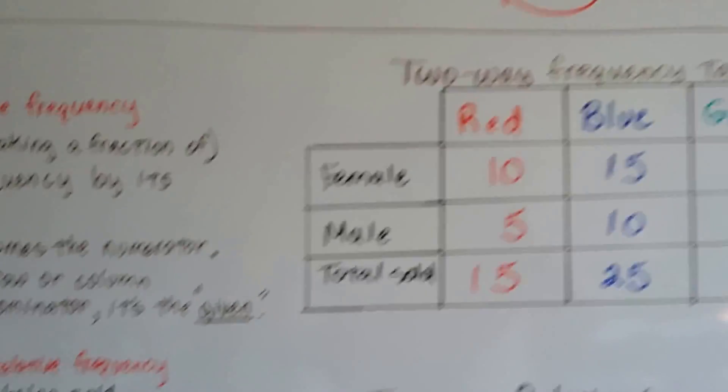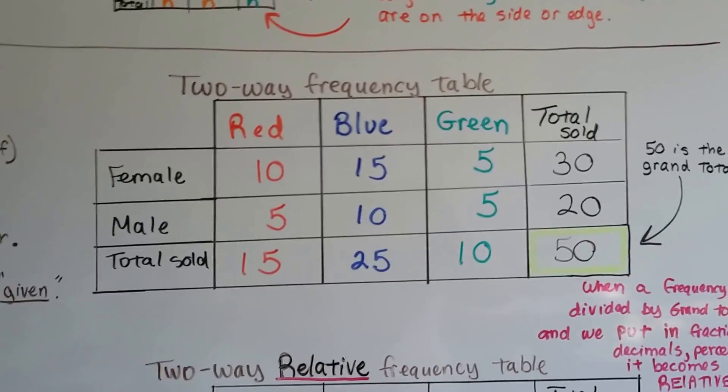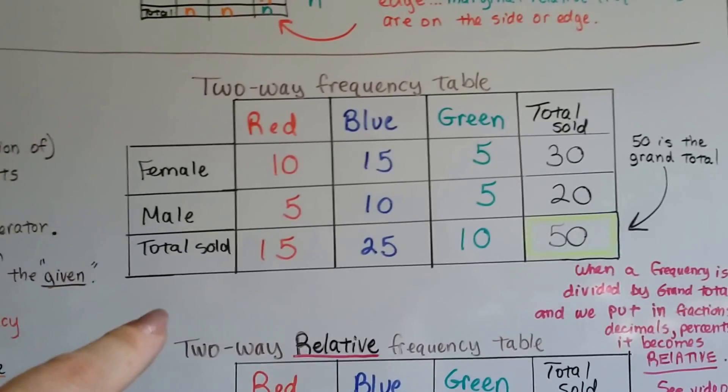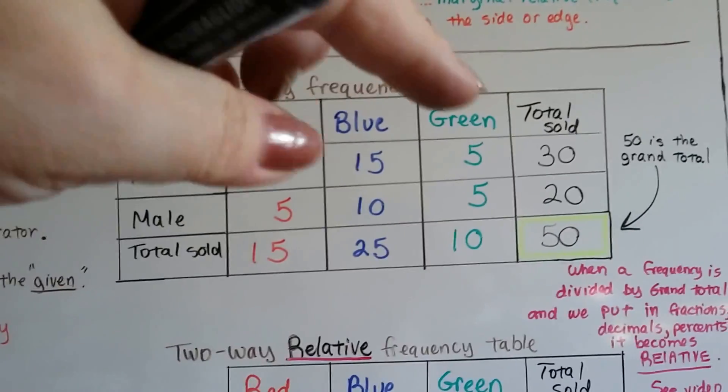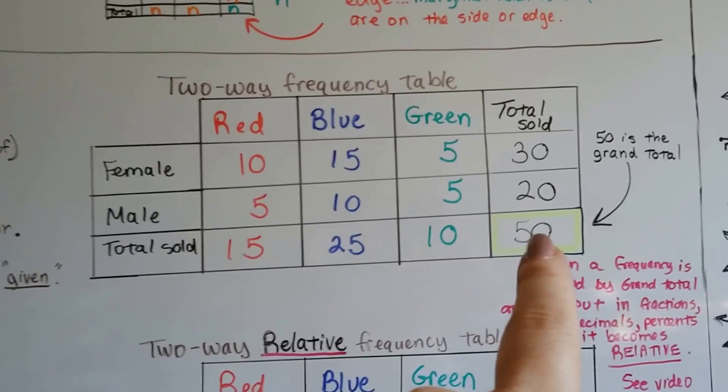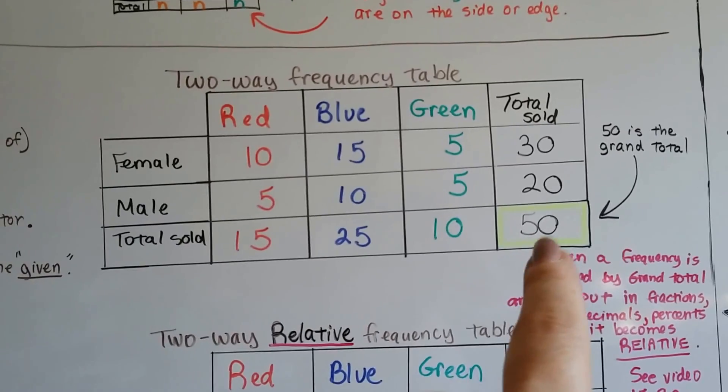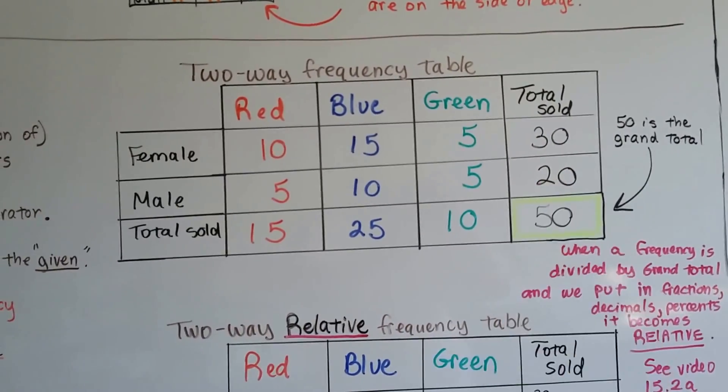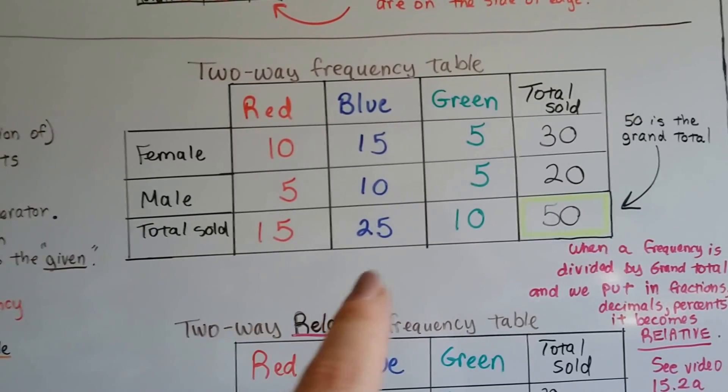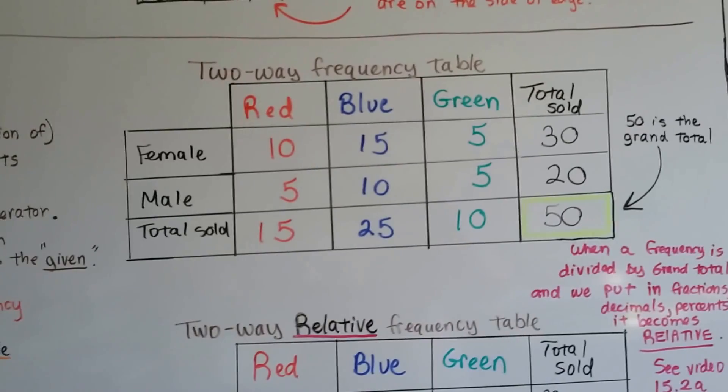So we've got this two-way frequency table. And in the last video, we used this table showing how many t-shirts Tala sold. She sold red, blue, and green ones. Here's our grand total, the 50. That's how many she sold in all. She sold 30 to females, 20 to males, and she sold 15 red, 25 blue, and 10 green.